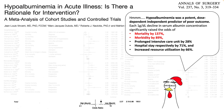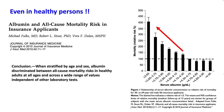Myths about albumin have been complicated by its association with mortality in both sick and non-sick patients. In this most-quoted meta-analysis, Vincent et al. showed that for each 1 g/dL decline in albumin levels, the odds of mortality and morbidity increase by about 100%. A similar finding was published for healthier patients, where relative risk for death increased with lower albumin levels.